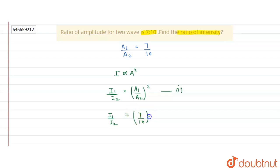Taking whole square of the term, we will get 49 by 100. Therefore, the ratio of intensity I1 by I2 will be 49 by 100. Thank you.